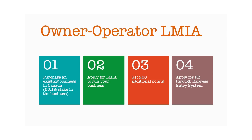And finally, the owner-operator LMIA — this is a direct pathway to permanent residency, just like the Startup Visa program. Under this program, you can purchase an existing business. You need to have a minimum of 50.1% shares in the business. You then have to apply for an LMIA to prove that no one is available locally to operate your business. If approved, you get 200 extra points with which you can apply for PR through the Express Entry system.